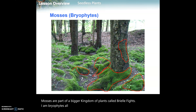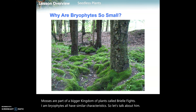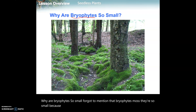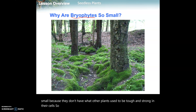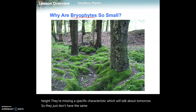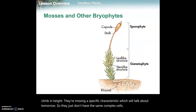Mosses are part of a bigger kingdom of plants called bryophytes, and bryophytes all have similar characteristics. Why are bryophytes so small? They're small because they don't have what other plants use to be tough and strong in their cells - allowing other plants to grow on top of each other and continue to climb in height. They're missing a specific characteristic we'll talk about tomorrow, so they just don't have the same complex cells.